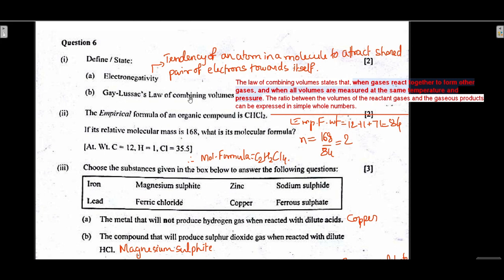Question 6: Define electronegativity — the tendency of an atom in a molecule to attract the shared pair of electrons towards itself. Gay-Lussac's law of combining volumes: when gases react together to form other gases, and when all volumes are measured at the same temperature and pressure, the ratio between the volumes of reactant gases and gaseous products can be expressed in simple whole number ratios.